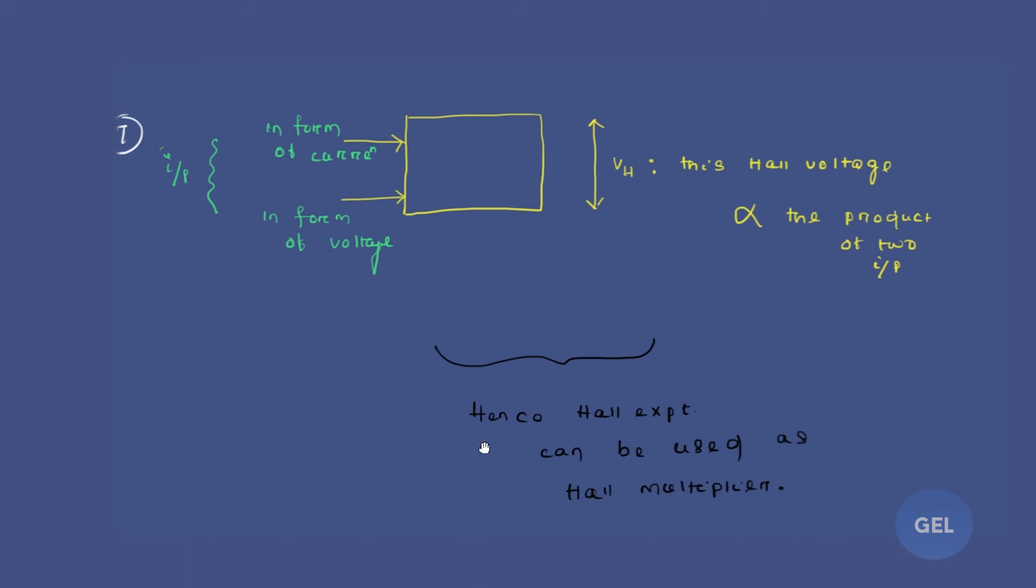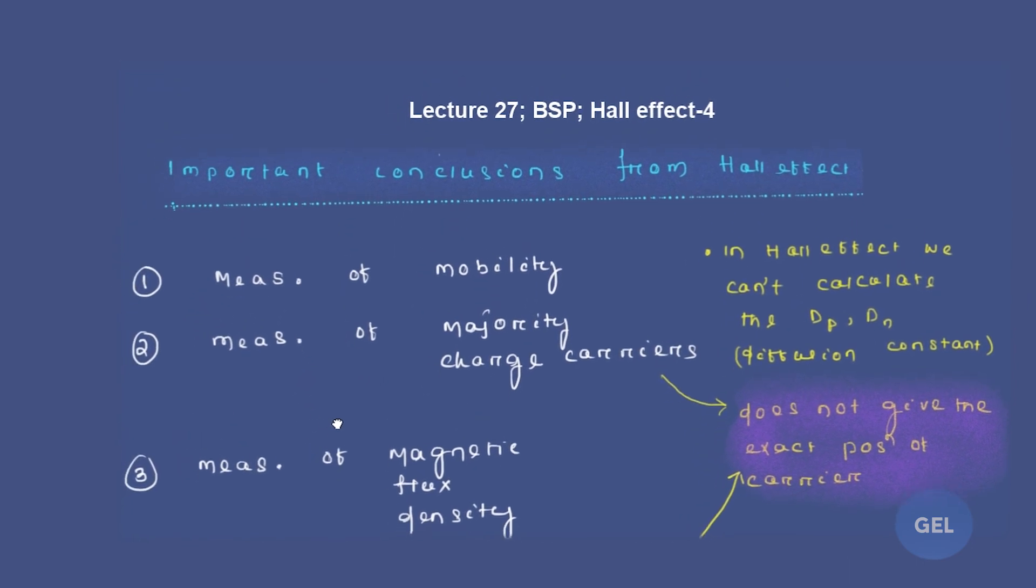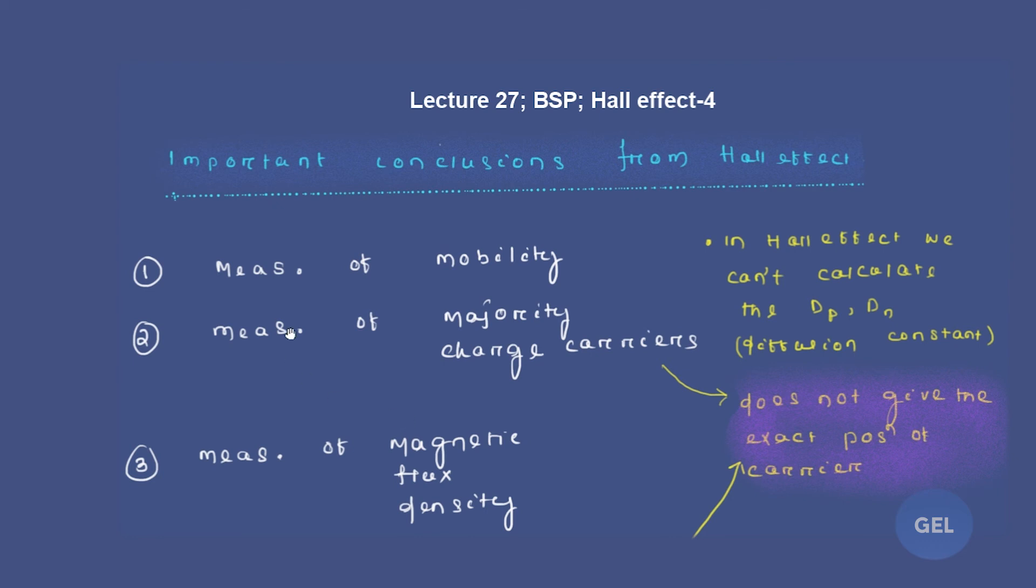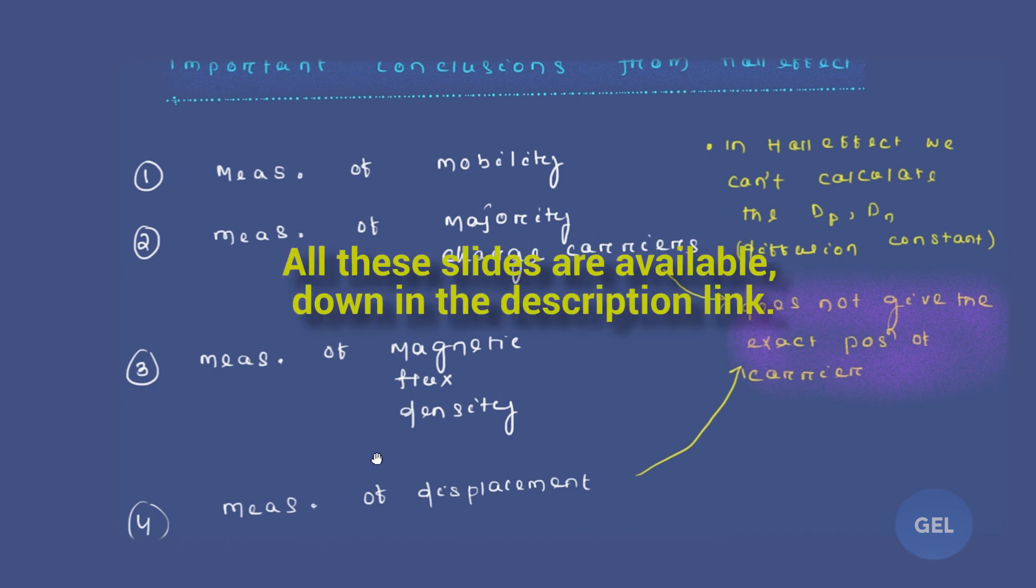Now these 7 important conclusions I wrote down in a proper way so that it can be helpful for your GATE and ESC exams. I request you to go through these slides once again instead of watching this video again and again. Instead of writing down these notes from the video, you can go to the description menu and find these 7 points over there. Thank you so much for watching this video. Bye.